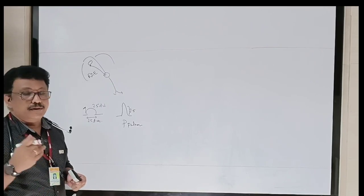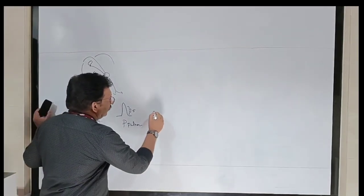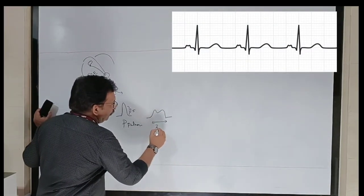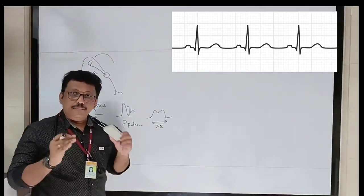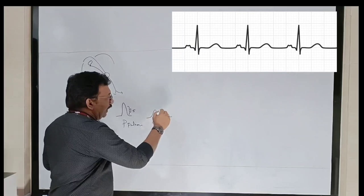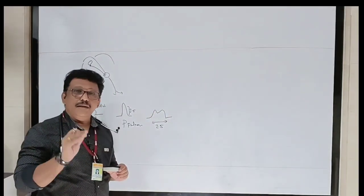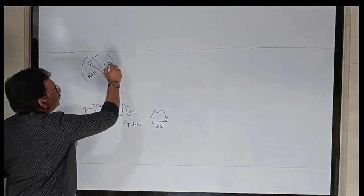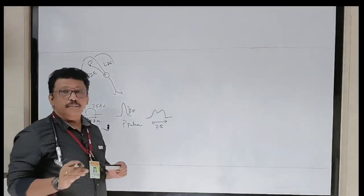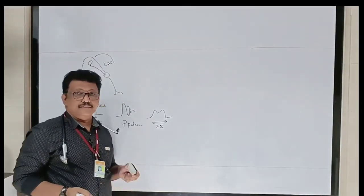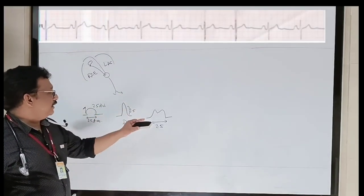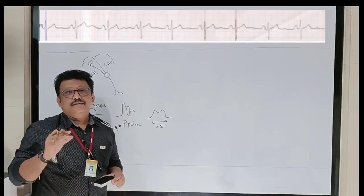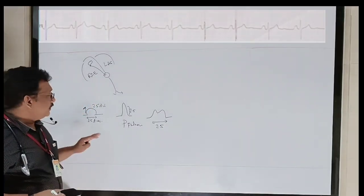If the P waves are wide and notched — width more than 2.5 divisions — we call it a wide P wave. With a notch it is an M-shaped P wave, called P mitrale. P mitrale is classically seen in left atrial enlargement, classically in mitral stenosis or sometimes mitral regurgitation. A mitral valve disease produces a wide notched P wave like an M pattern — this is P mitrale.